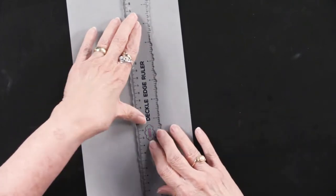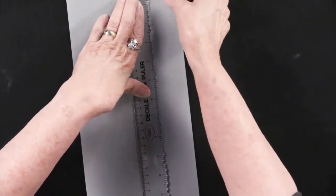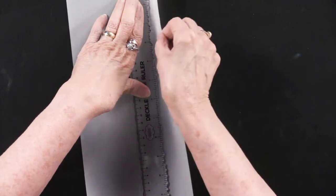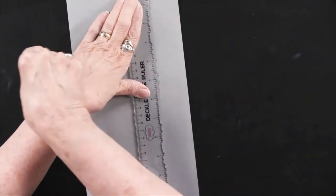Use this for mats, use this for borders, whatever you like. So I'm going to hold it down really hard, and I'm going to take whatever I'm going to tear and go against the ruler, of course, kind of going this way.